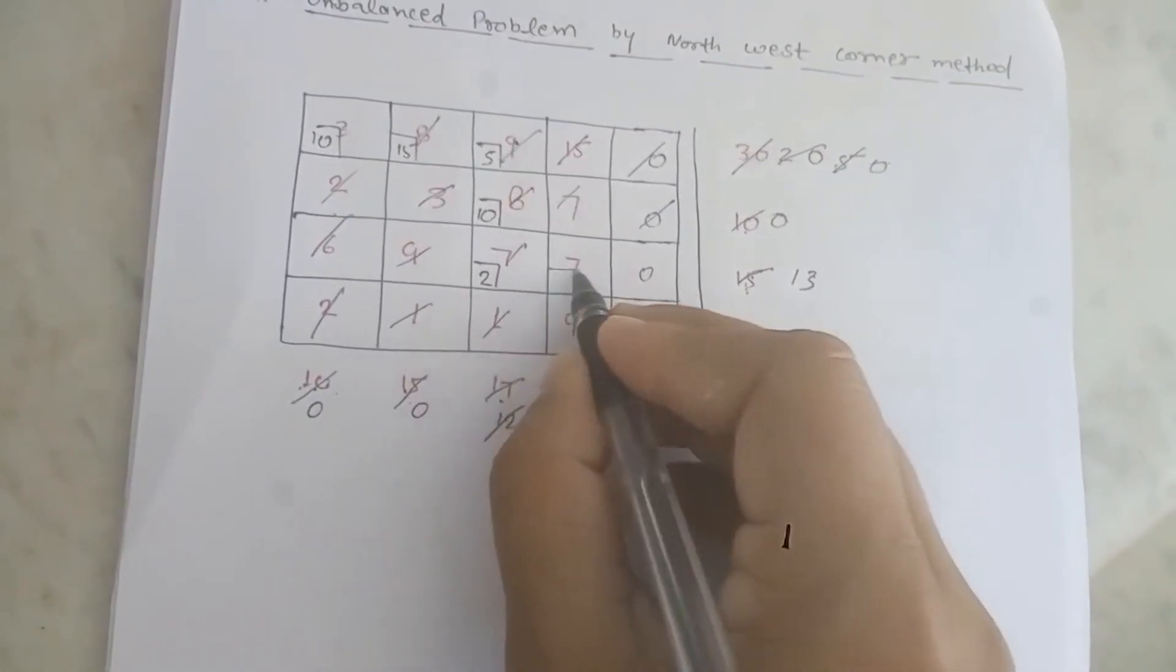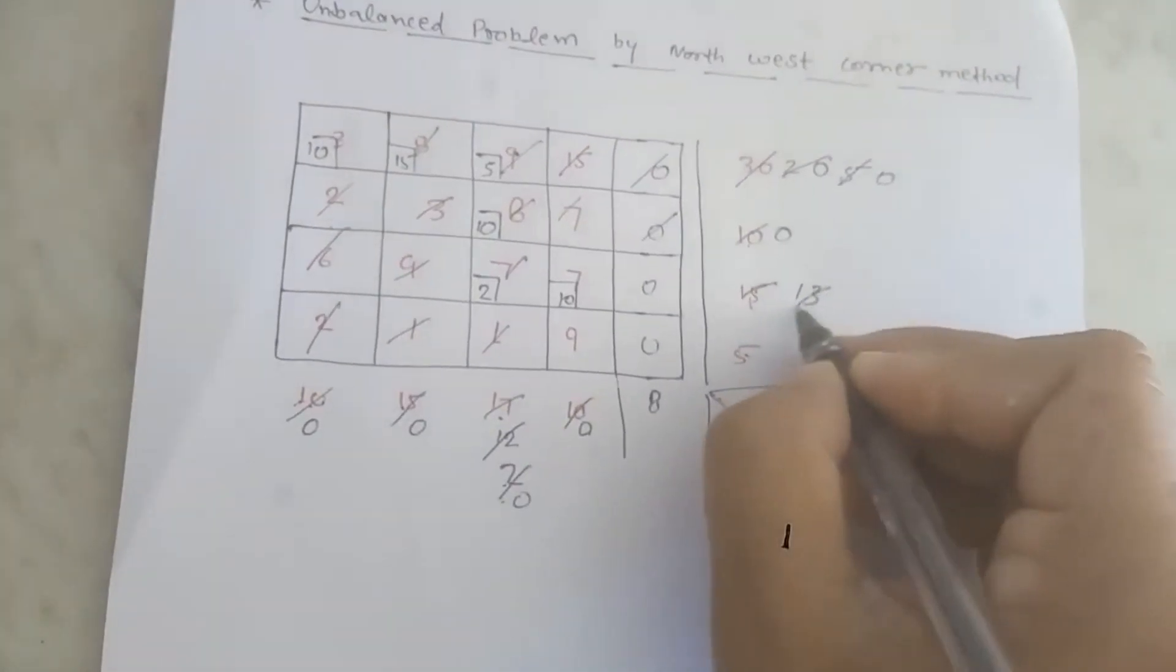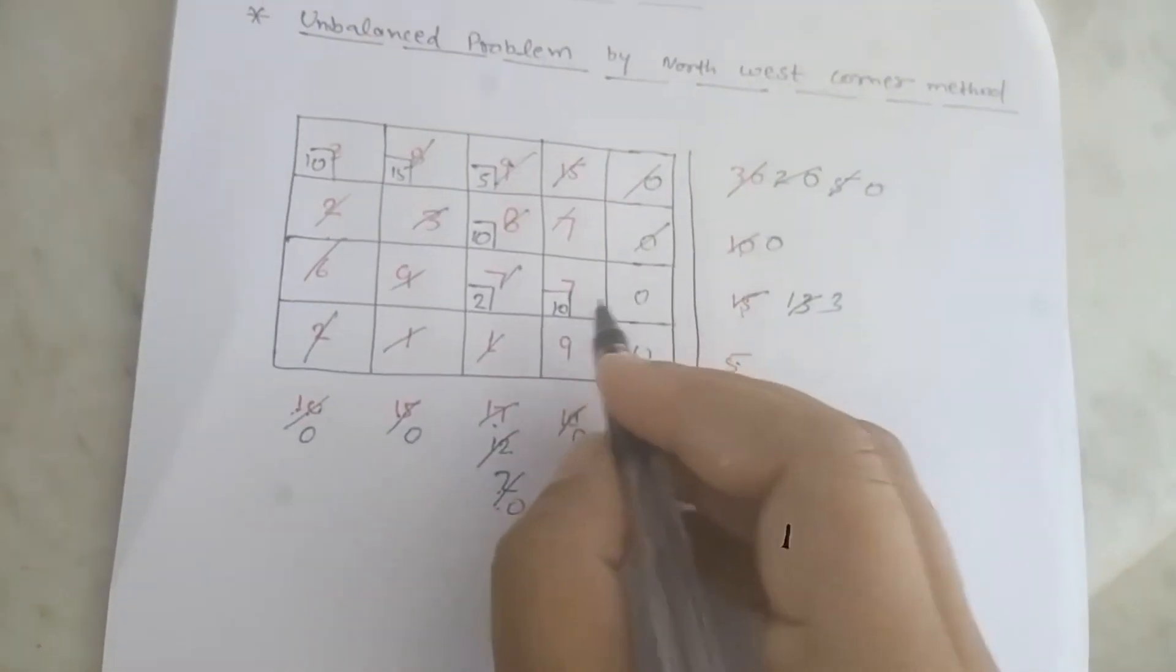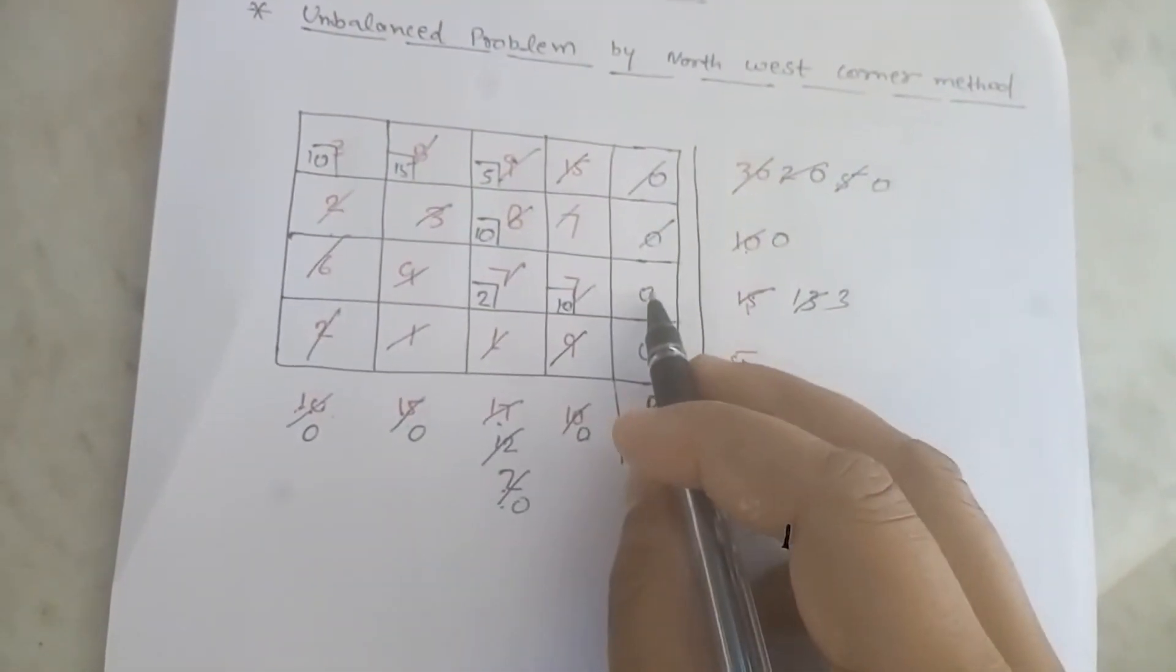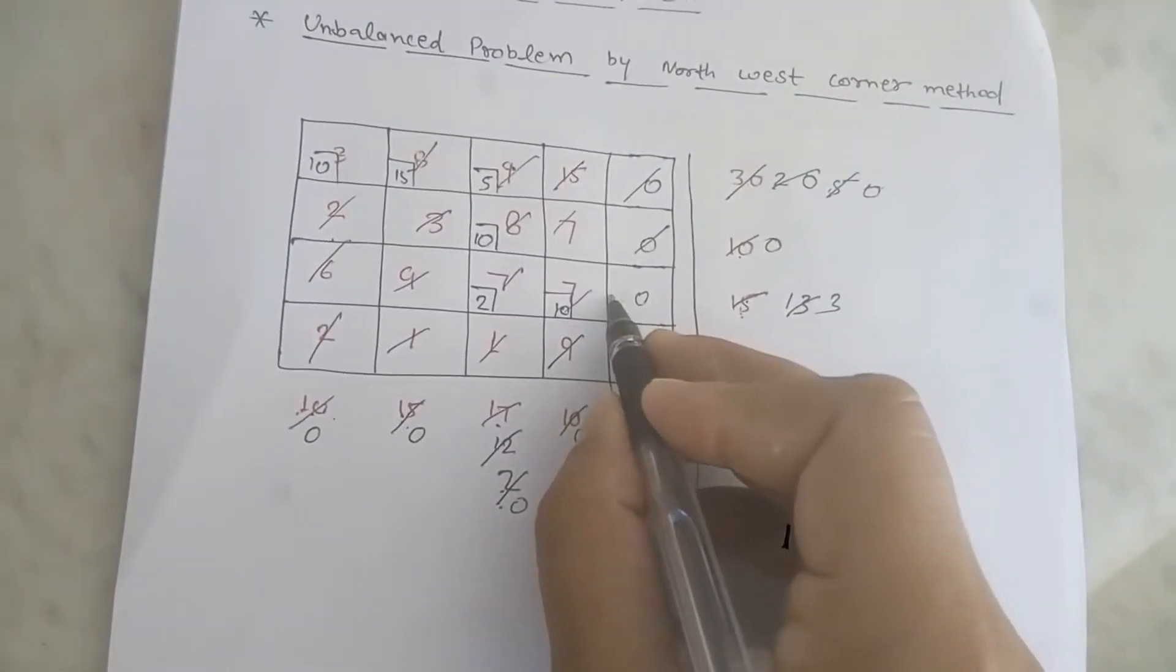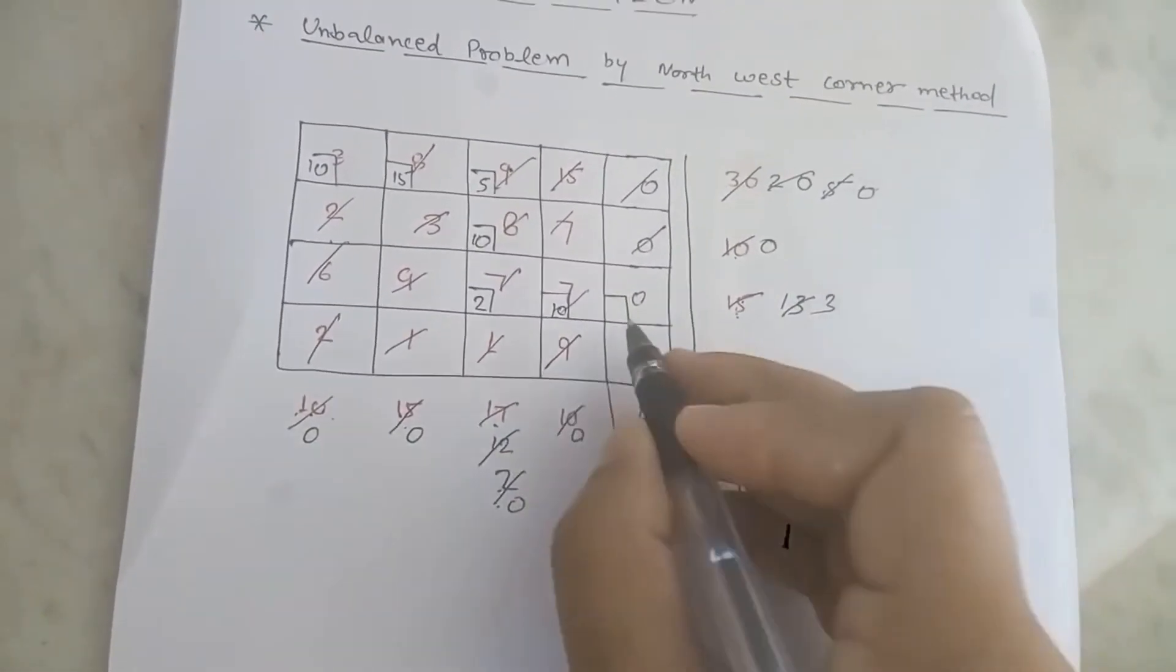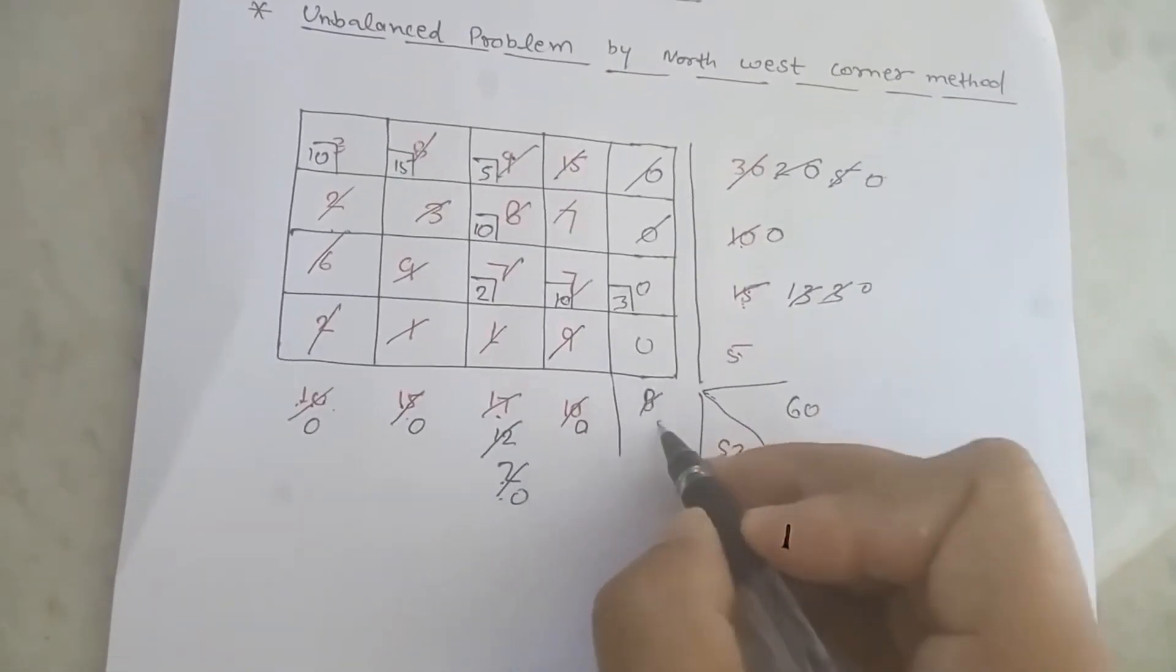So if you plot the values: 10, we have to plot. So this is 0 and this is 3. Now this is 3. So 2 plus 10 plus 3 is 15, so again balance is 5.